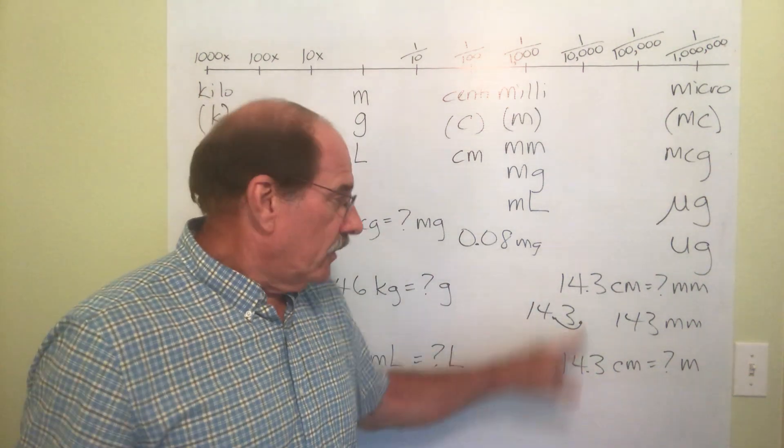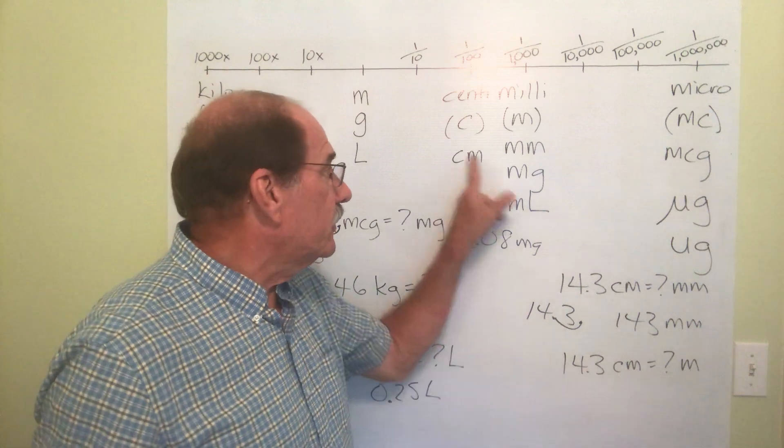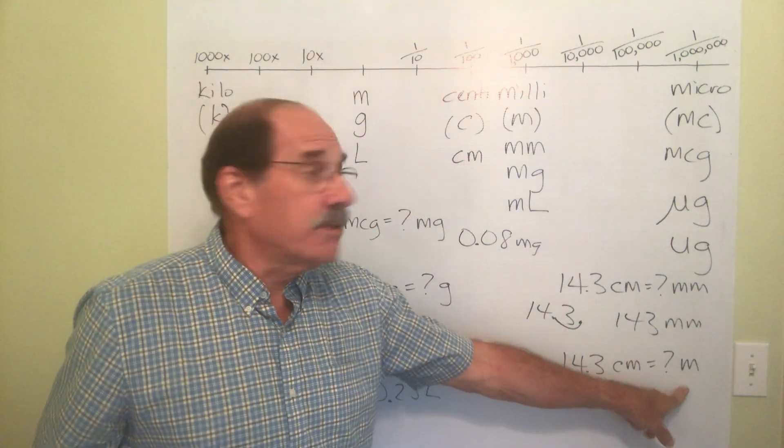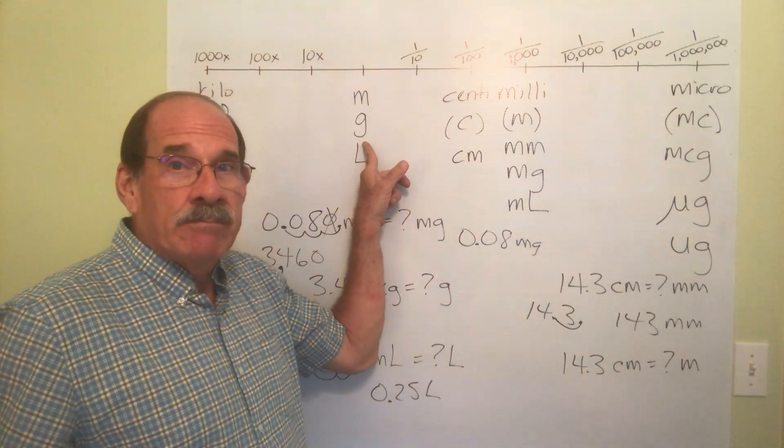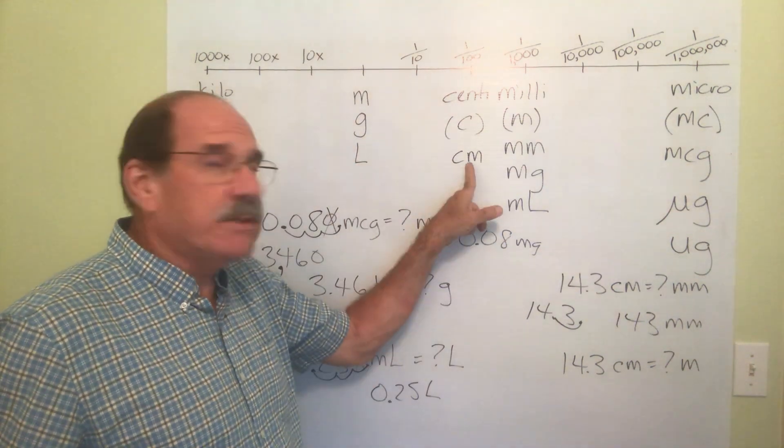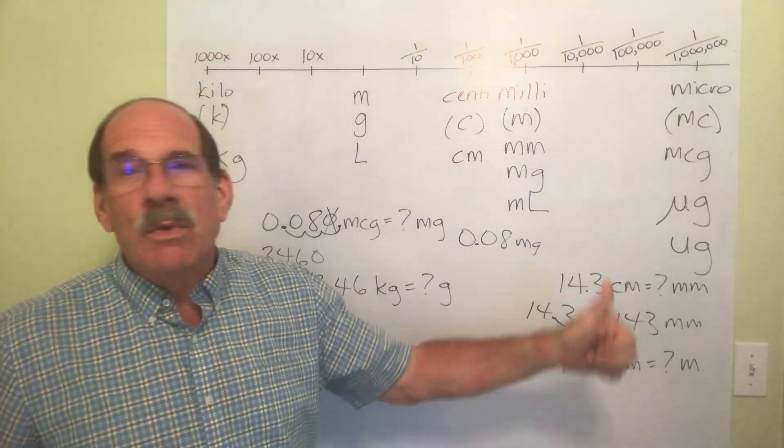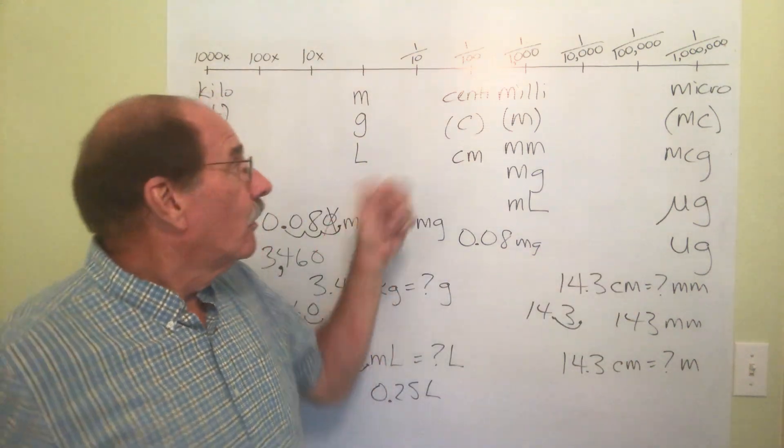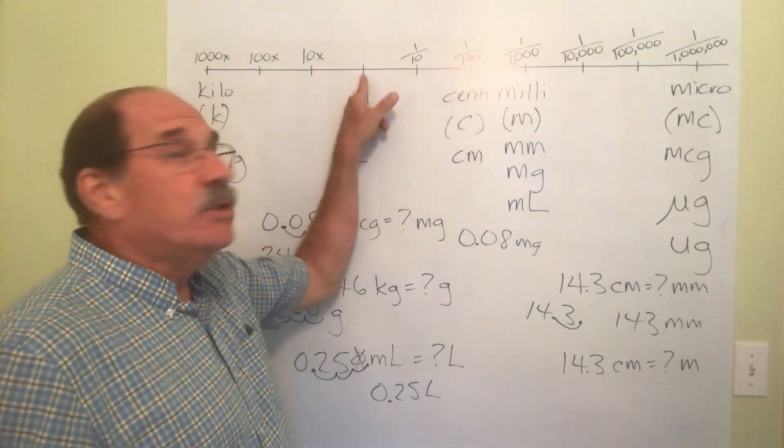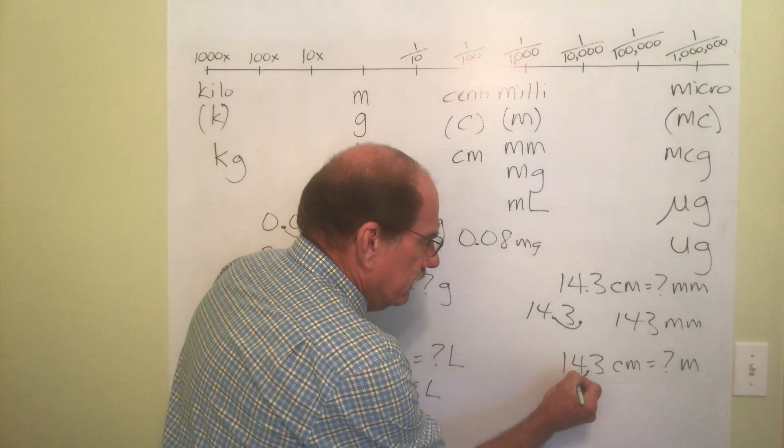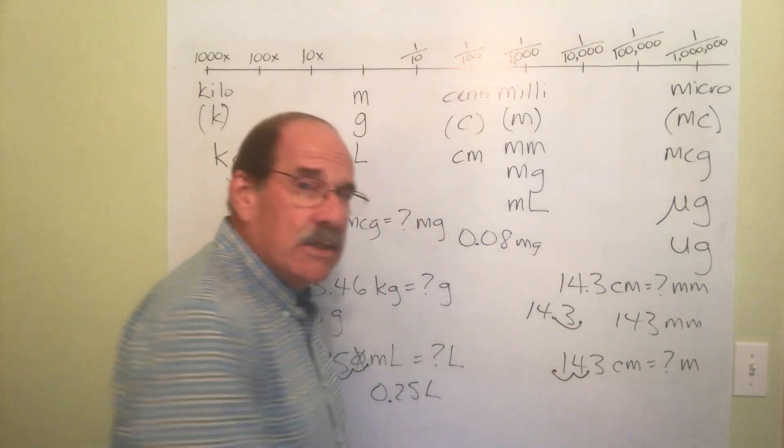Let's start with the same number, though. So 14.3 centimeters. Let me figure out how many meters that is. Meters is right here. So if I'm starting from centimeters, and I'm trying to find out the number of meters, I'm going to the left. How many places? Just two. So I start here. I go one, two, dot ends up there.